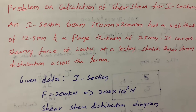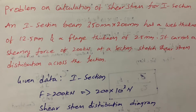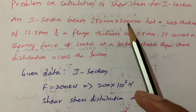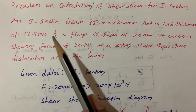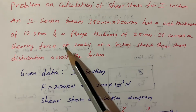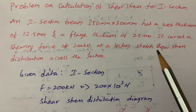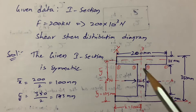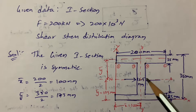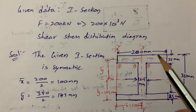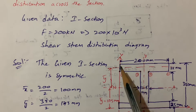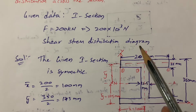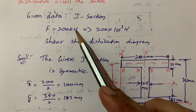In this video I am going to explain shear stress distribution for an I-section. The I-section dimensions given are 350 mm depth and 200 mm width, with web thickness 12.5 mm and flange thickness 25 mm, carrying a shearing force of 200 kilonewtons. We have to draw the shear stress distribution across the section. This is a symmetrical I-section because the dimensions are all the same: 200 mm on both sides and 12.5 mm web thickness.